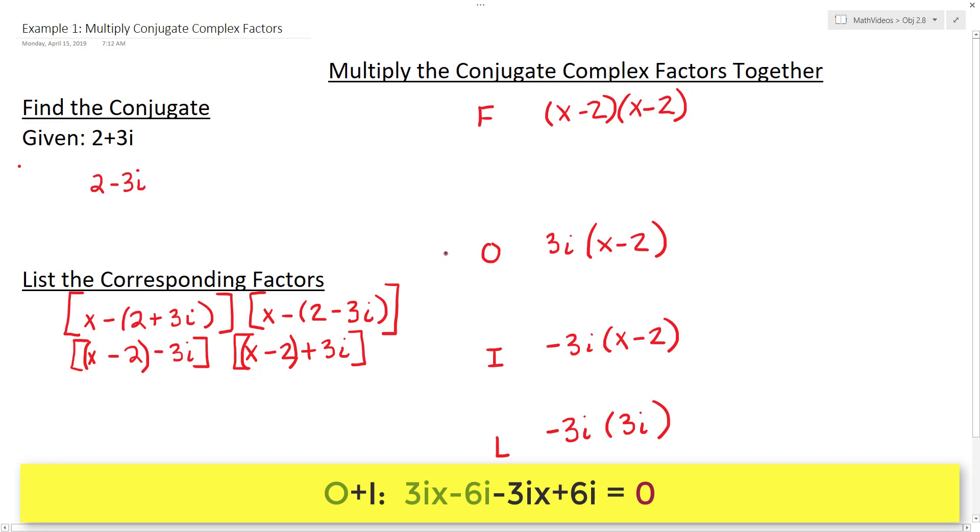because they're just opposite in signs, they're going to actually add out to zero. So I'm going to just go ahead and cross them out to kind of simplify my work. I don't even have to deal with the outside and the inside piece. And that will be the case for conjugate complex factors if you group them the way we did.